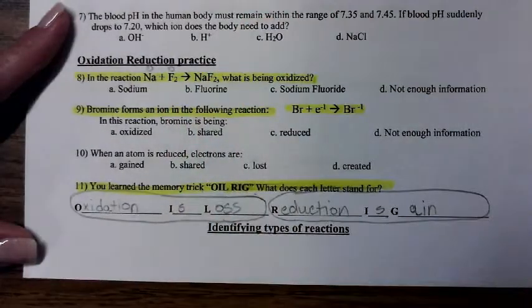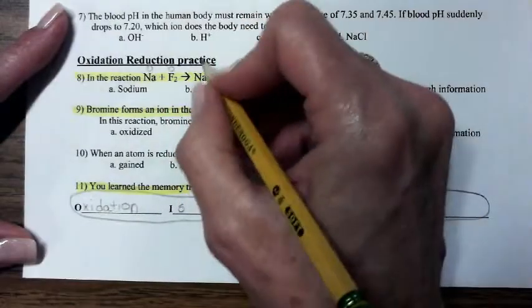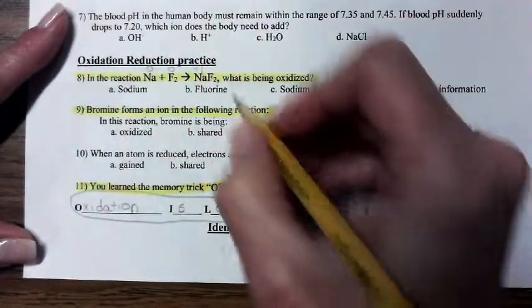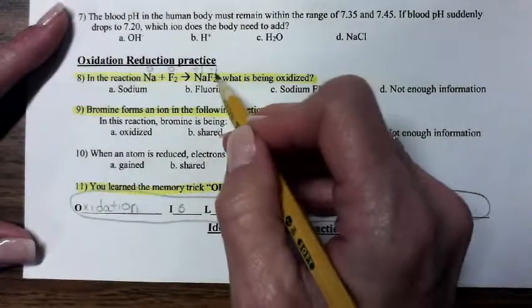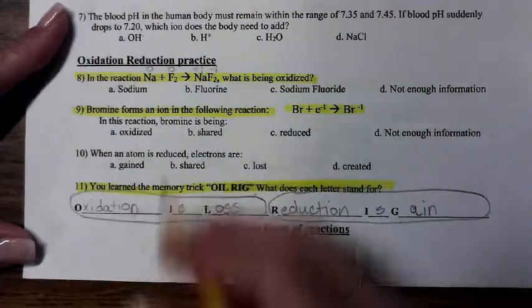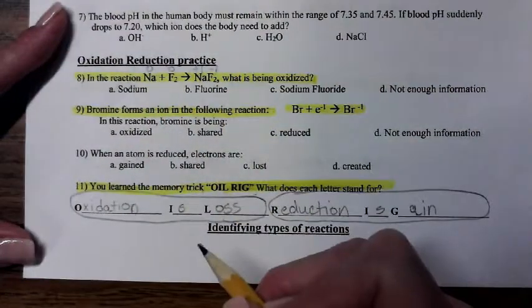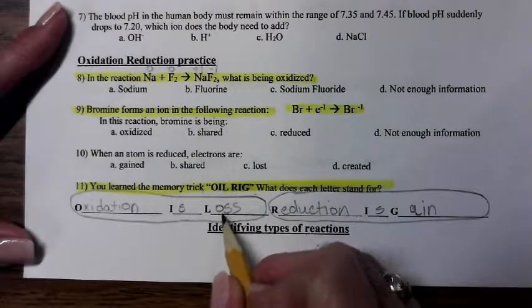Sodium's oxidation number as a free element has an oxidation number of 0. Fluorine is 0. In this compound, sodium has an oxidation number of plus 1, and fluorine has an oxidation number of negative 1. Those are easily found on the periodic table. So I need to figure out which one is losing electrons.